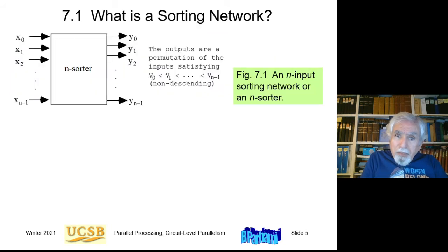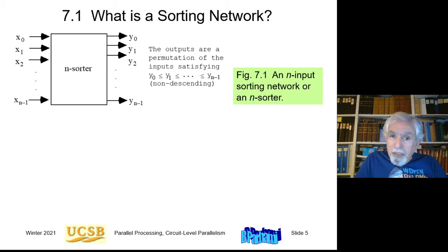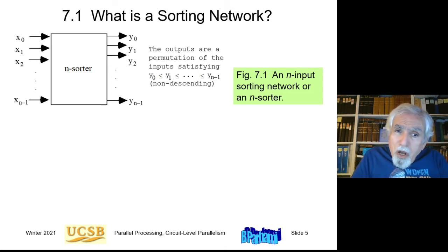Let's get started with some basic concepts. The sorting network, sometimes called n-sorter when it has n inputs, receives n inputs x0, x1 up to xn-1 on the left and produces n outputs y0, y1 up to yn-1 on the right. The outputs are a permutation of the inputs satisfying these inequalities: y0 less than or equal to y1, less than or equal to y2, all the way up to yn-1. When you go from y0 to yn-1, the values never go down — they either stay the same or go up. This is called non-descending sorting.